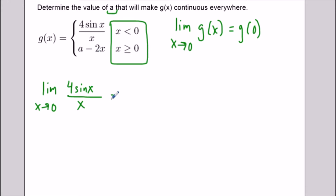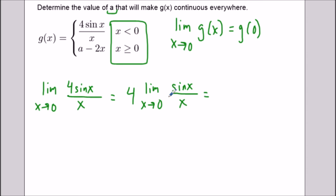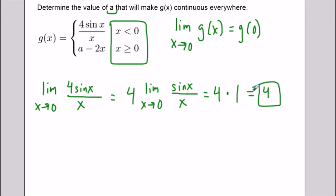Now we evaluate this limit — we can factor out the constant four. You should recognize the limit as x approaches zero of sine x over x is equal to one. If you don't know that identity you could also use L'Hôpital's rule here. So we have four times one, meaning the limit as x approaches zero is equal to four. This is not necessarily our final answer, but it's one piece to get us there.